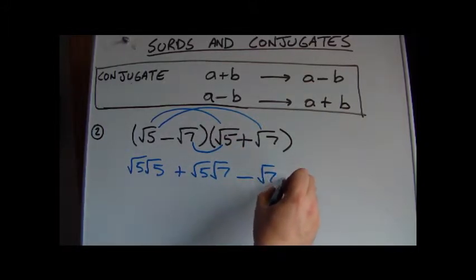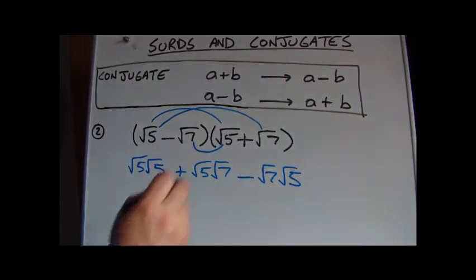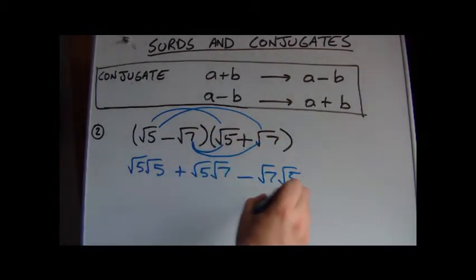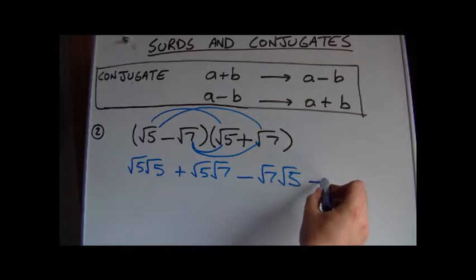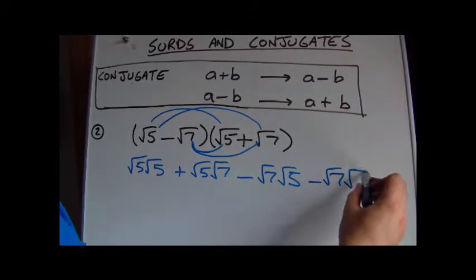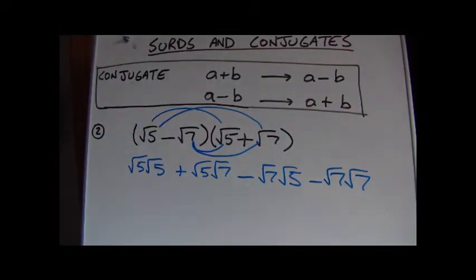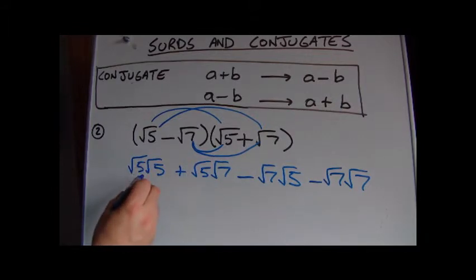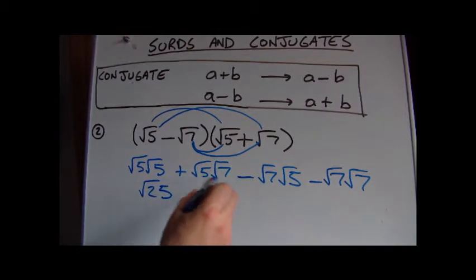If we multiply those two together, we get minus root 7 root 5, and we multiply those two together and it's going to give us minus root 7 times root 7. It doesn't look great at the moment, but we'll simplify it. Root 5 times root 5 is root 25, that will simplify to 5.